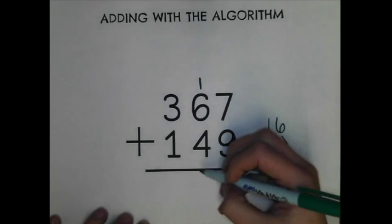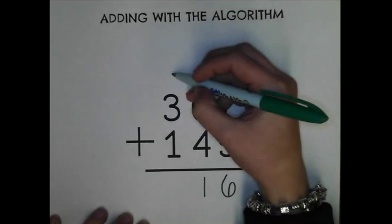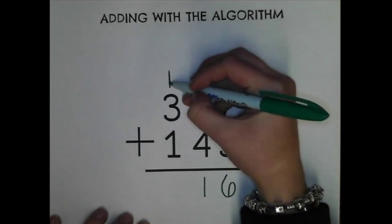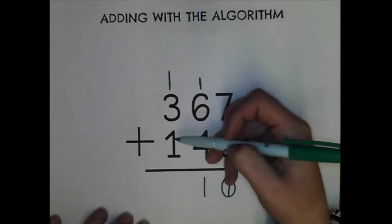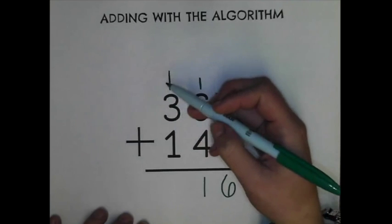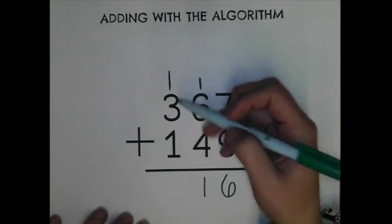So what I'm going to do is I'm going to put my one group of ten down here and then my group of a hundred up here to add in. Then I have three plus one equals four plus another group of hundreds equals five.